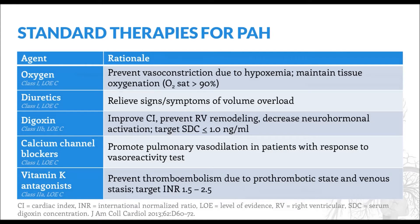Standard supportive therapies for patients with PAH include oxygen for those with hypoxemia and diuretics for those with volume overload. Digoxin may be considered to assist with right ventricular support and to prevent remodeling, although this latter use is largely hypothetical. As mentioned previously, calcium channel blockers may be used in patients with a positive vasoreactivity test. Finally, vitamin K antagonists are considered for many PAH patients due to their increased thromboembolic risk, although a lower INR range, such as 1.5 to 2.5, is generally targeted.